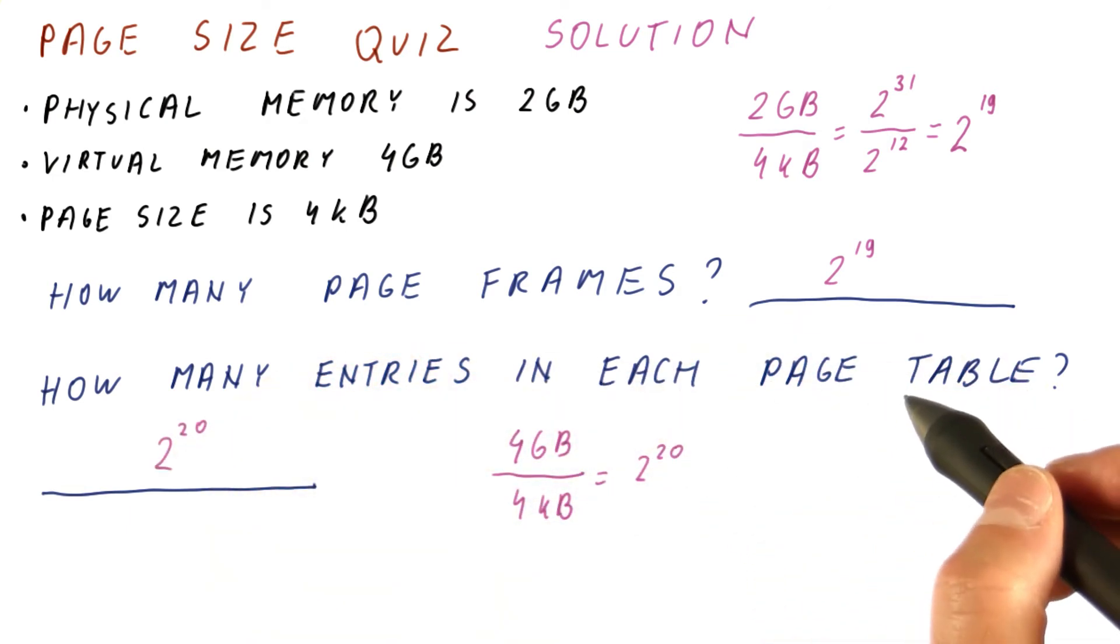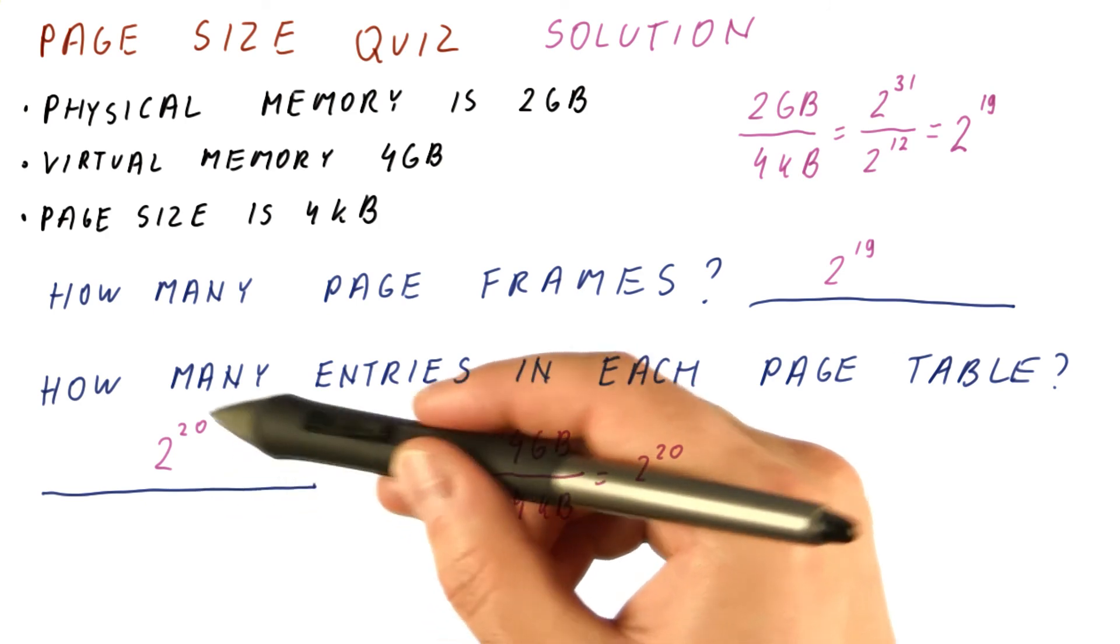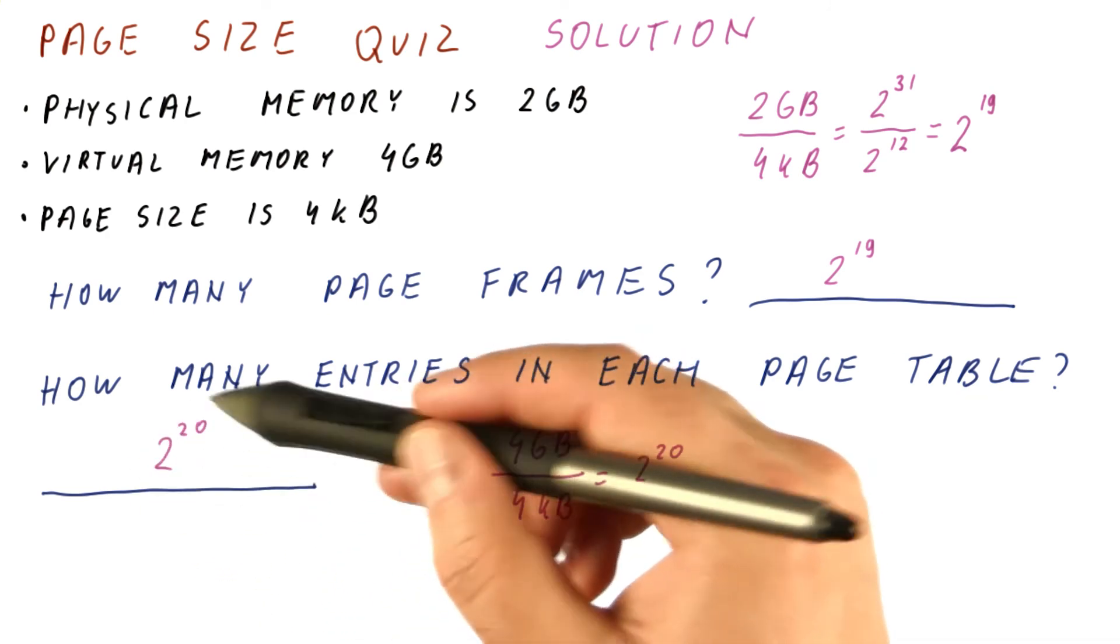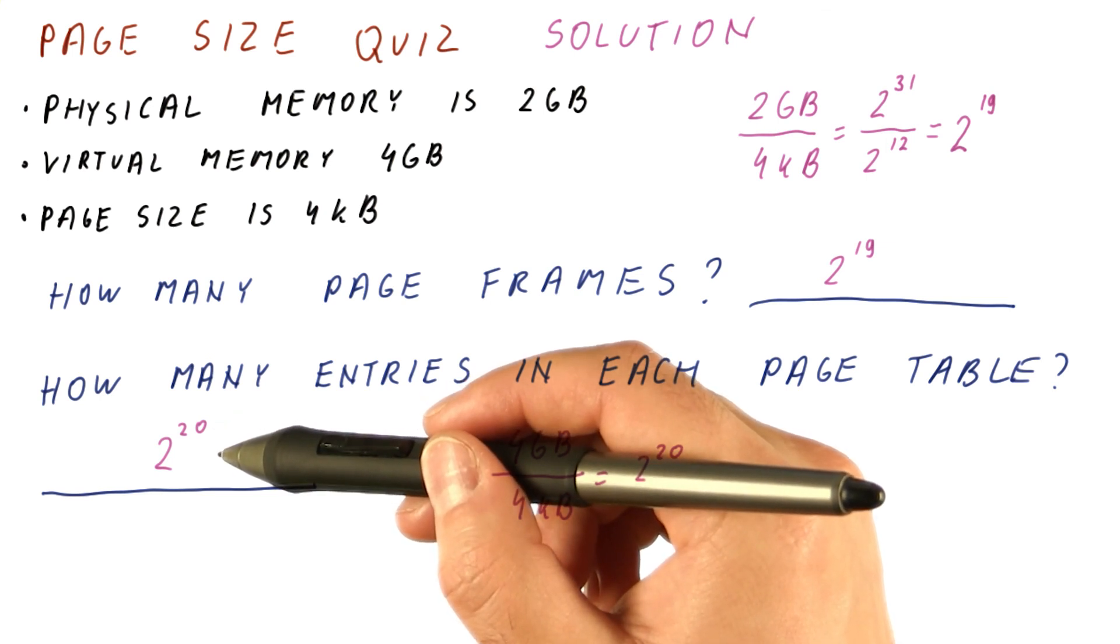Note that we need a separate page table for each process. Each process is four gigabytes of virtual memory. So each process in our system will need a page table that is this large. Two to the 20th, or slightly more than one million entries.